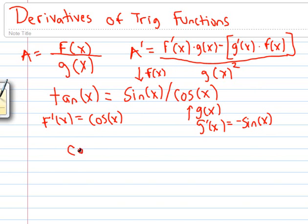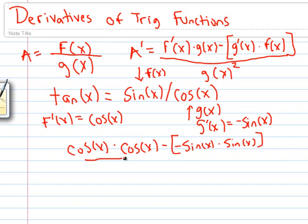So our formula here just needs to be substituted into with the values we just calculated. So f prime of x, we write cosine of x, times cosine of x, negative sine of x, times sine of x, all over cosine of x squared.